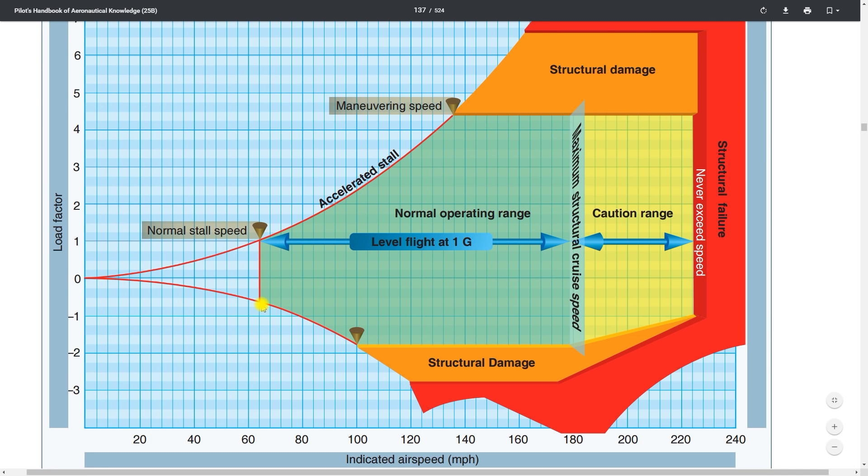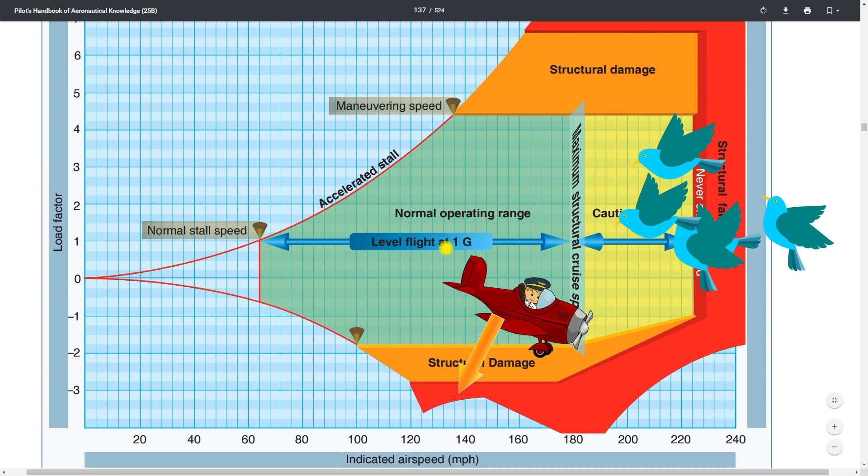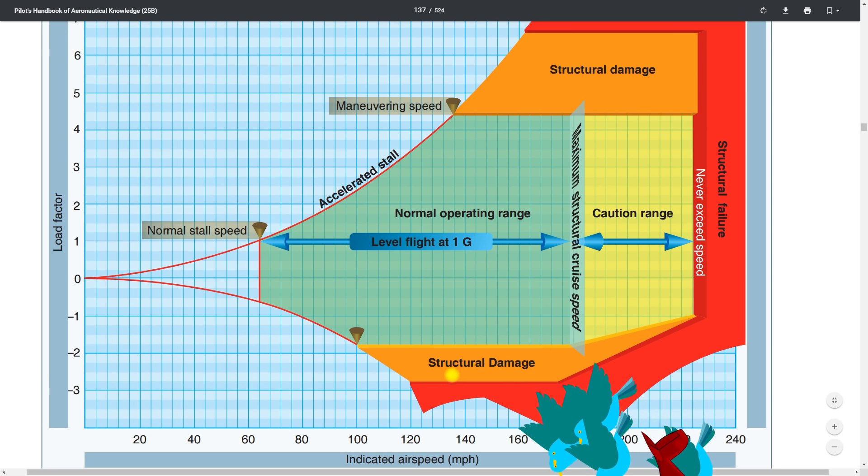Also, that negative G limit you may think is only applicable to, like, doing aerobatics or flying the airplane upside down, but it's not. It's actually, how could you exceed this? Well, say you're just doing maybe 130 miles per hour, and there's birds in front of you, and you aggressively push down, shove the yoke forward, and that negative G's the airplane all the way to a point of structural damage or structural failure. So there is actually a negative G maneuvering speed much lower because your negative G limit is much lower than the positive G limit. So just be aware of that.